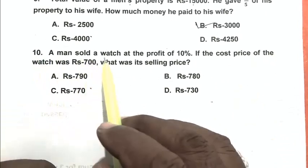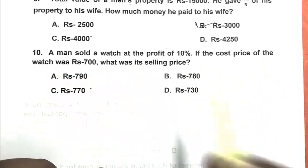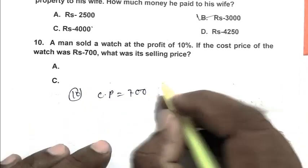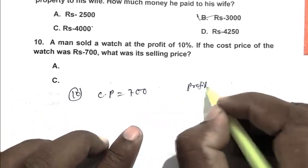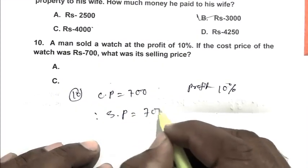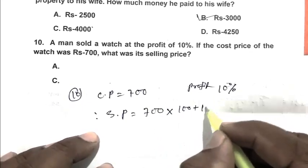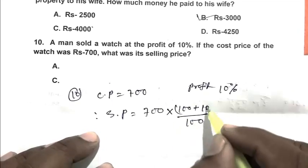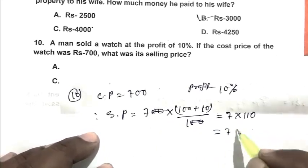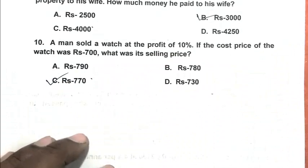Question number 10: A man sold a watch at a profit of 10%. If the cost price of the watch was rupees 700, what was the selling price? Cost price is 700, profit is 10%. So selling price equals 700 multiplied by 100 plus profit percentage, that is 10, by 100. So 7 multiplied by 110, that is 770. So C is the right answer. Thank you for watching, have a good day.